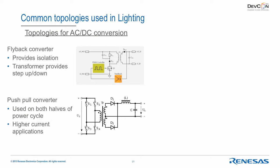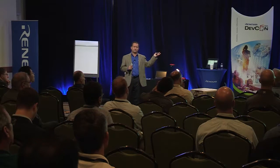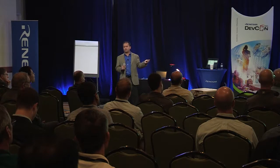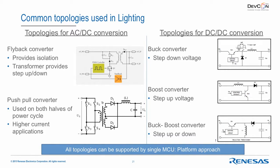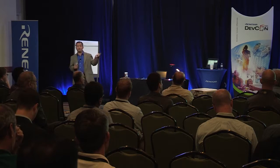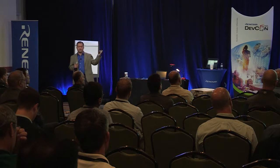Let's look at the platform approach using MCUs. Common topologies for AC-to-DC include flyback (providing isolation and step-down) and push-pull converter (which works on both half-cycles, preferred for high-power applications). For DC-to-DC: buck converter for step-down, boost for step-up, and buck-boost for flexibility. The interesting part is that pretty much all of these topologies can be handled with a single MCU — the exact same chip gives you the flexibility to do all of this, allowing you to create a platform and change it on the fly using software.